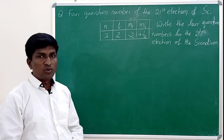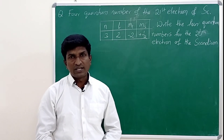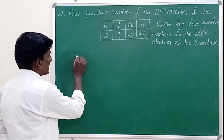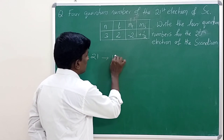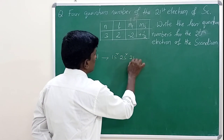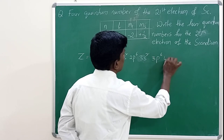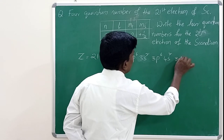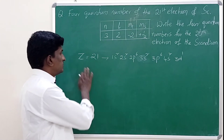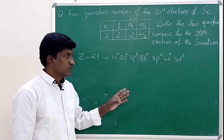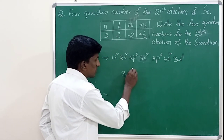Before writing the four quantum numbers of the 20th electron, let us know the atomic number of scandium. The atomic number of scandium is 21, so Z = 21. Its electronic configuration is 1s2 2s2 2p6 3s2 3p6 4s2 3d1. This is the electronic configuration of scandium, which has atomic number 21.